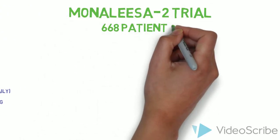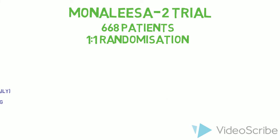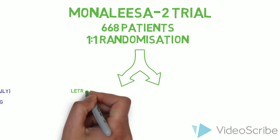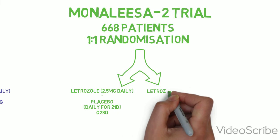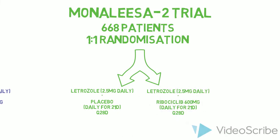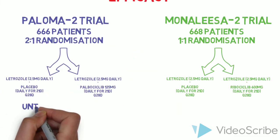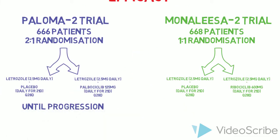The Mona Lisa 2 trial had almost an identical design to PALOMA-2, but used a 1 to 1 randomization instead of the 2 to 1 randomization. It randomized patients on the same 3 week on, 1 week off schedule, this time using the competitor drug ribocyclib. Patients also received letrozole throughout.